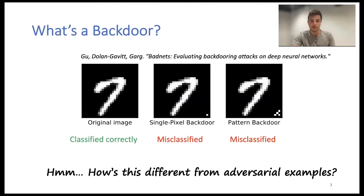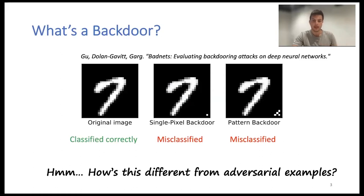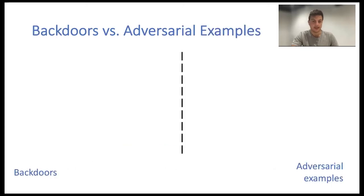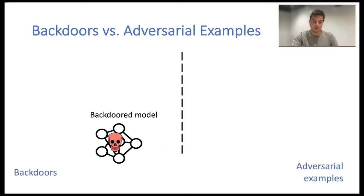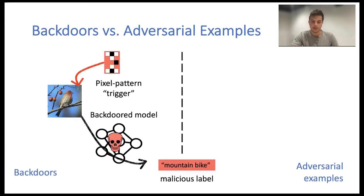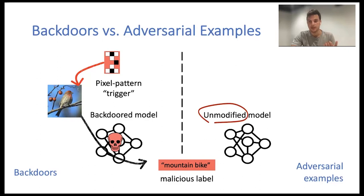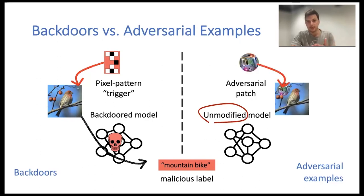Backdoors were originally introduced in the BadNets paper, in a setting where a backdoored model classifies a normal image correctly, but when a certain pixel pattern is added to the image, it starts to misclassify it. This sounds really similar to adversarial examples, except that you need to modify the model and the input to get the malicious label, whereas in adversarial examples you get an unmodified model, add a certain patch, and get the malicious label.